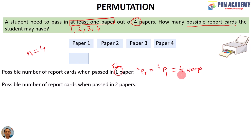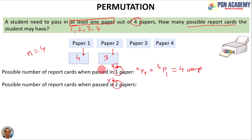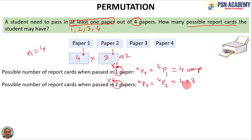For passing two papers: n=4, r=2. The first box has 4 options, and once one paper fills it, only 3 remain for the second box — giving 4×3 = 12 ways. By formula, 4P2 = 4×3 = 12 ways. For three papers: 4P3 = 4×3×2 = 24 ways.